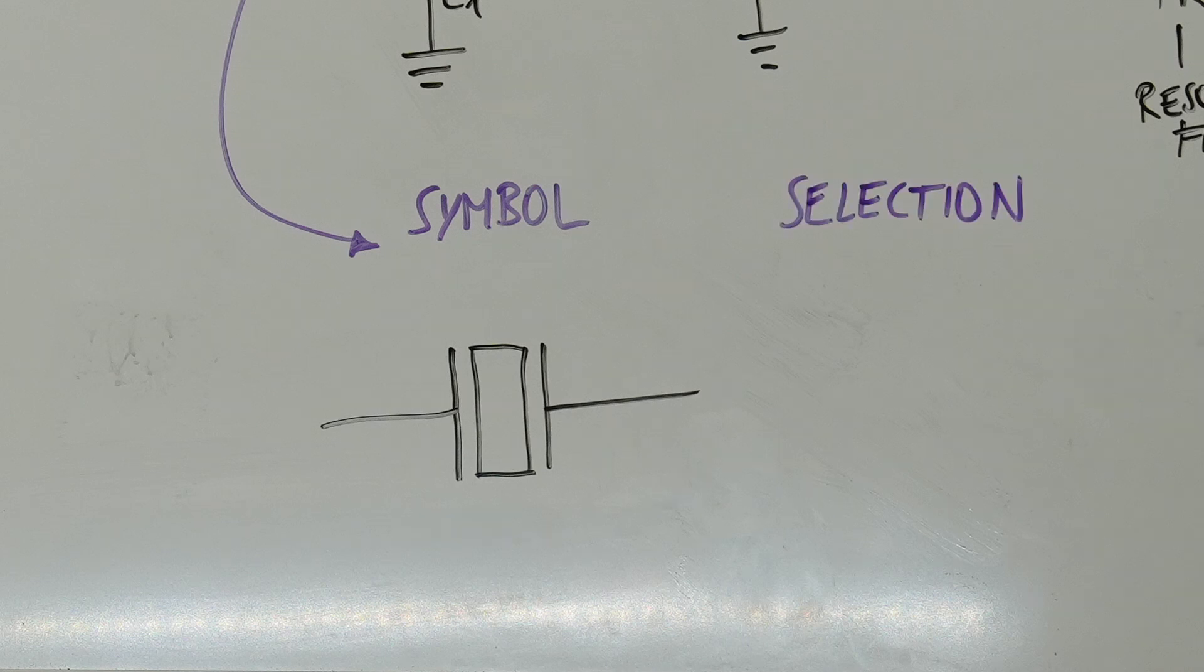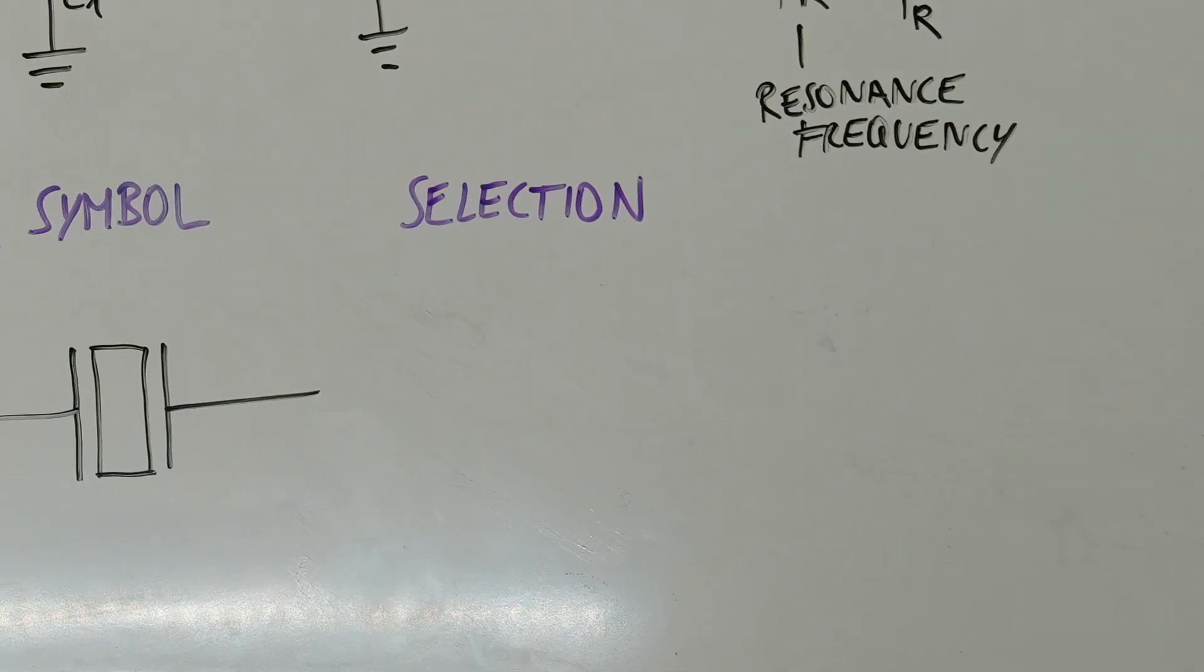When selecting a quartz crystal component for a circuit, we can typically choose the resonance frequency from a range of options. Common resonance frequency options include frequencies such as 4 MHz, 8 MHz, 16 MHz and so forth.